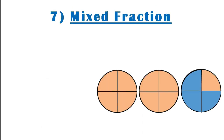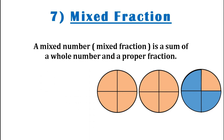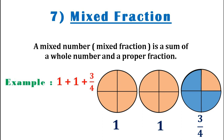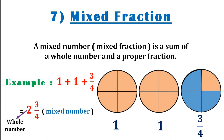Let us now know about the seventh type of fraction, that is mixed fraction. A mixed number, which is also known as a mixed fraction, is a sum of a whole number and a proper fraction. Let us look at the three circles shown below. The first two circles are completely coloured whereas the third circle has only three-fourths of it coloured. So if we sum up the three, we get 2 and 3 by 4, which is a mixed number where 2 represents a whole number and 3 by 4 represents a fraction.